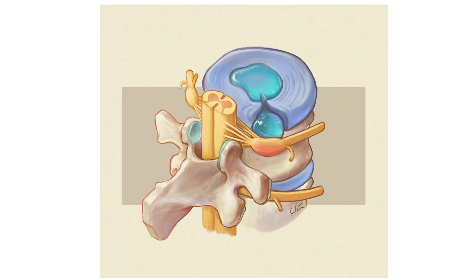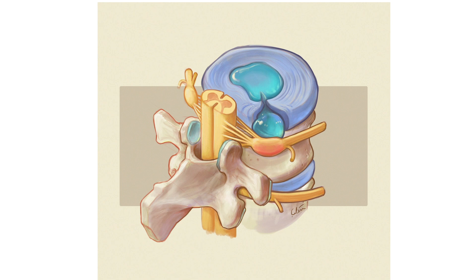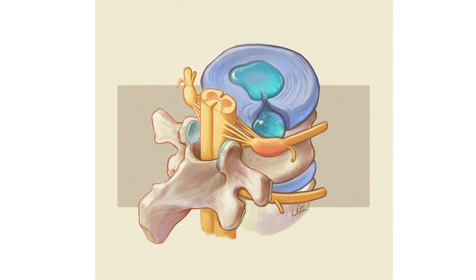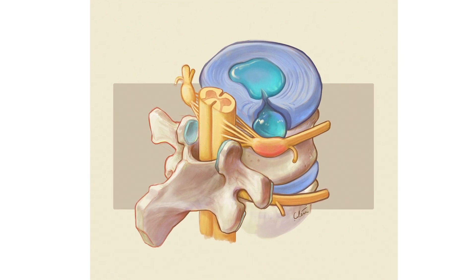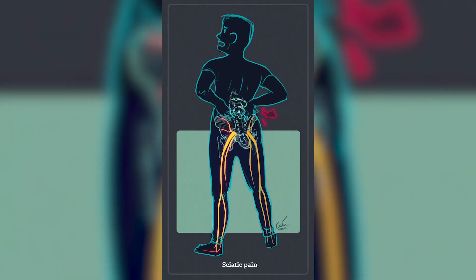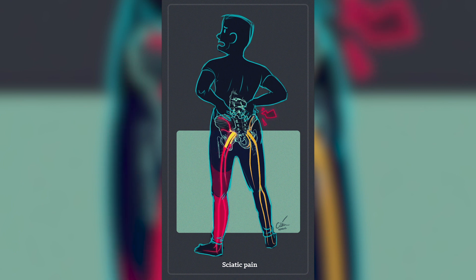This is known as a herniated disc. If the disc puts too much pressure on the nerve it can irritate or damage it, causing mild to severe pain going down the leg where the nerve travels — and that's known as sciatica. Some people also experience tingling and numbness in that area.